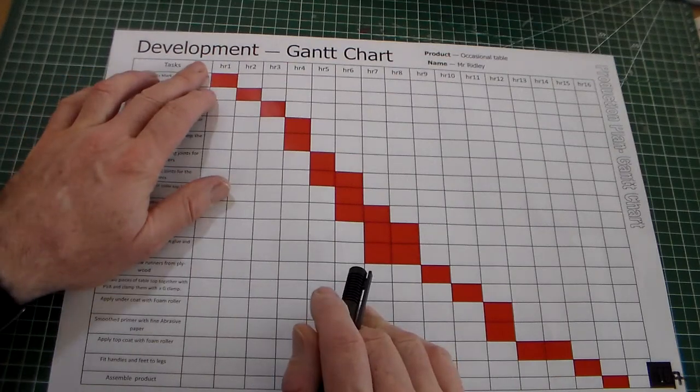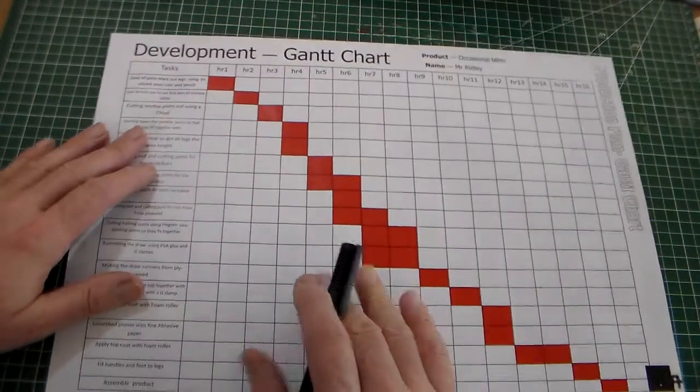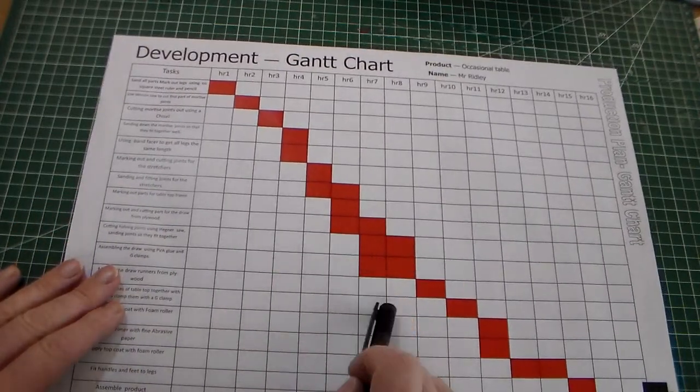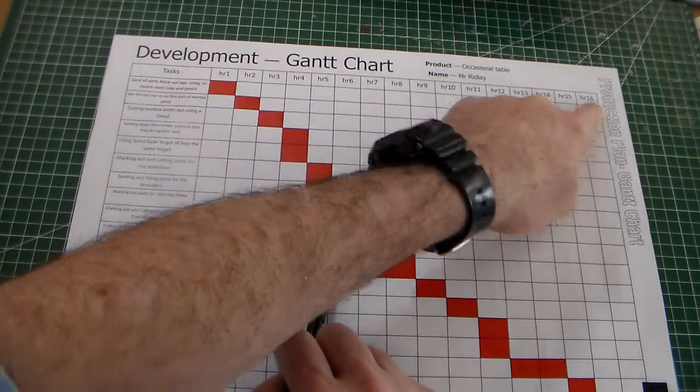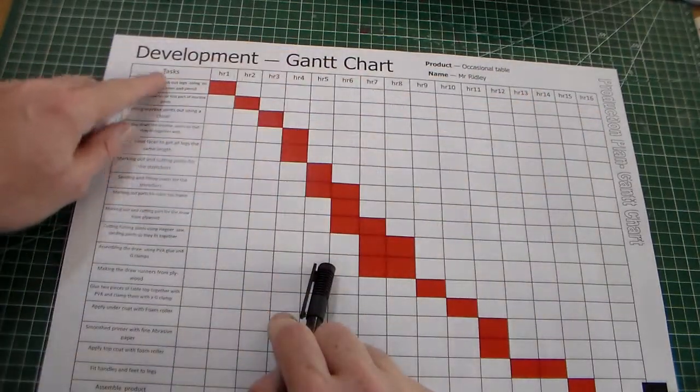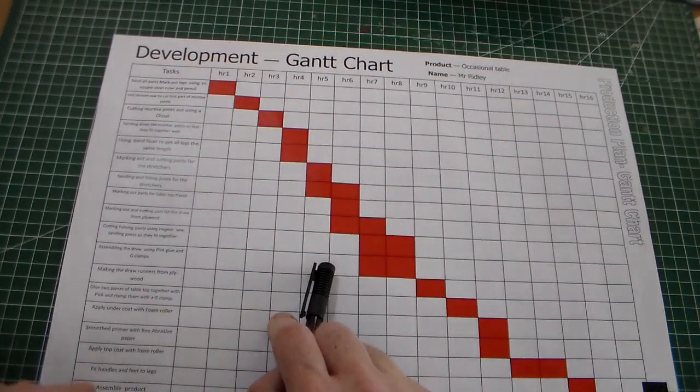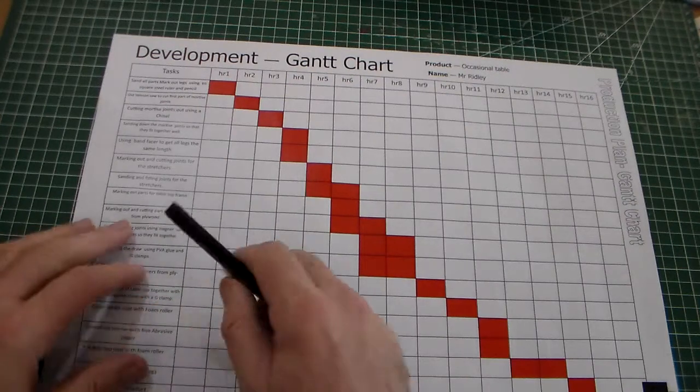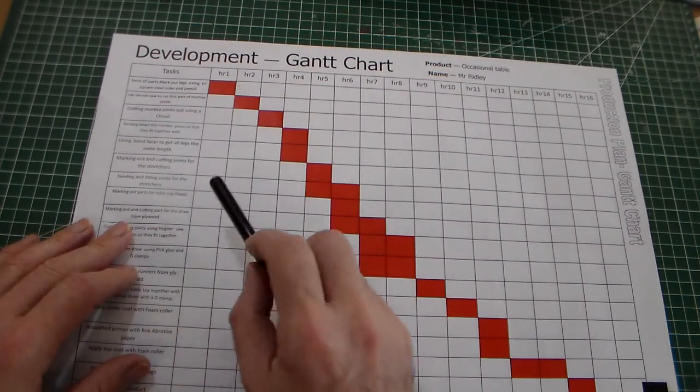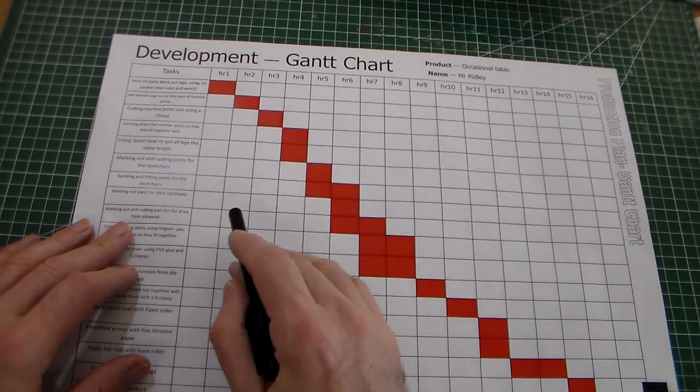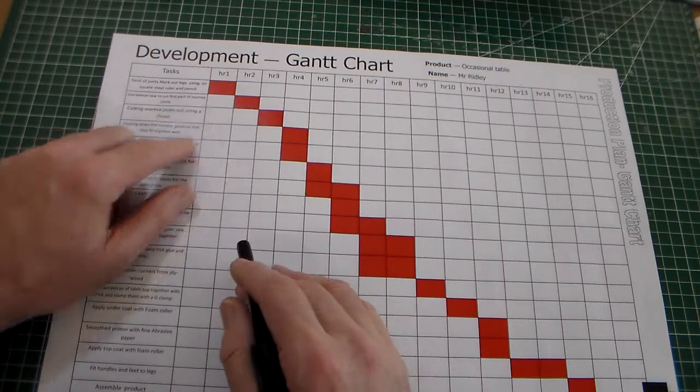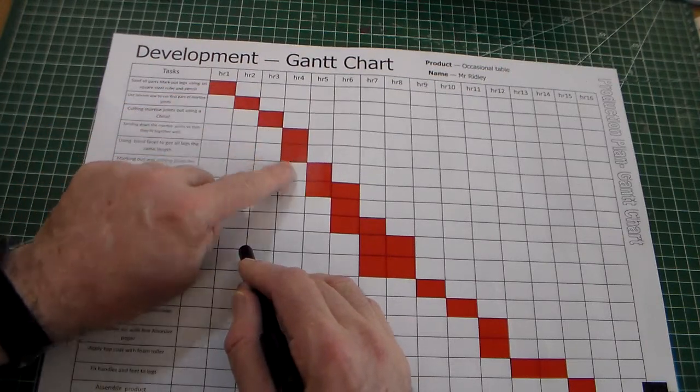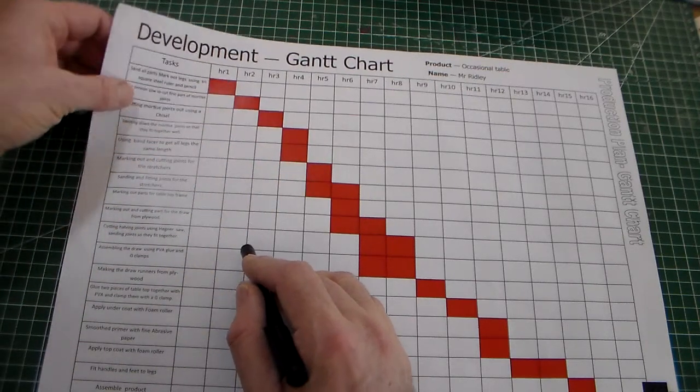We're calling the sheet development Gantt chart. On here, this is a completed sheet. We've got a grid with 16 hours going along here, and then we've got tasks down here. This Gantt chart is used to show project management or show the movement in tasks. We're going to use it to plan out our making or show the making that we planned. You should have probably started making by now.